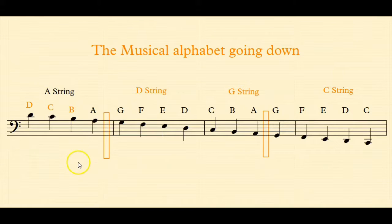Now let's talk about the musical alphabet going down one note at a time. If I was on the high D here I have to think going backwards in the alphabet. So we have D C B A and now we have to start over again on G F E D C B A then to G F E D and the open C string.